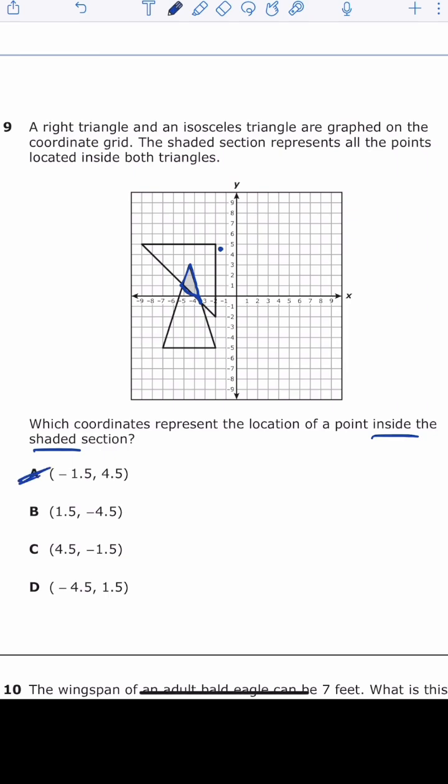Letter B is 1.5 and negative 4.5. So we're going to go to the right 1.5 and then down to 4.5. And if we do that, obviously it's nowhere close.